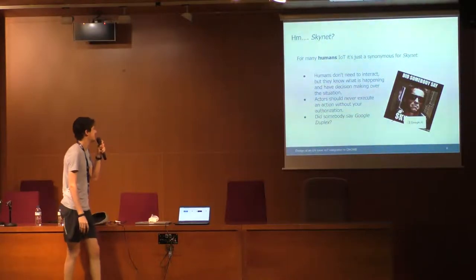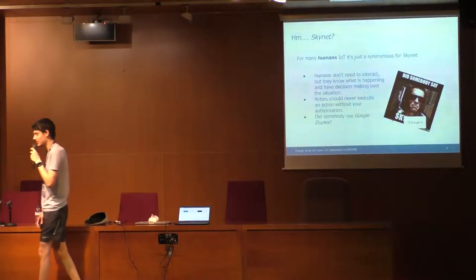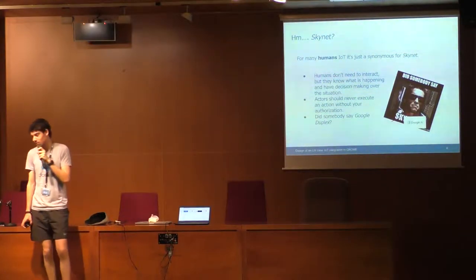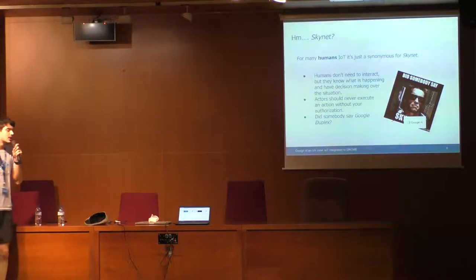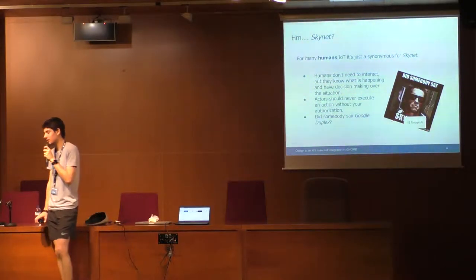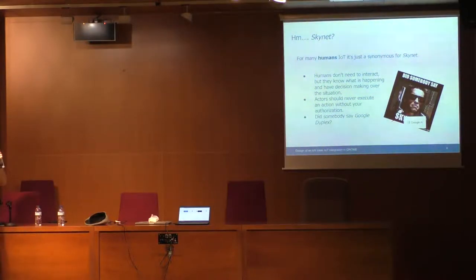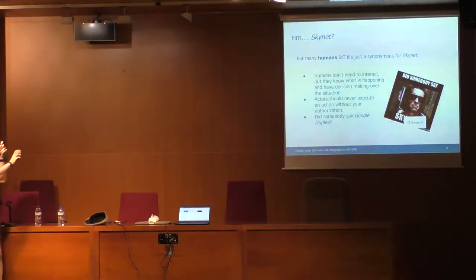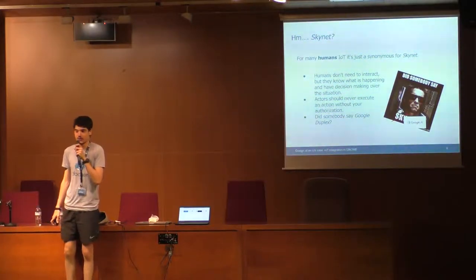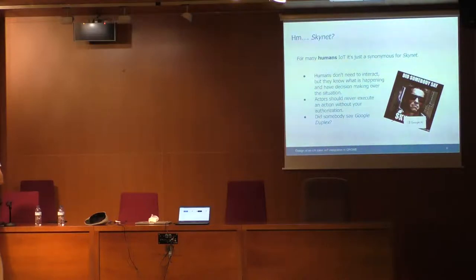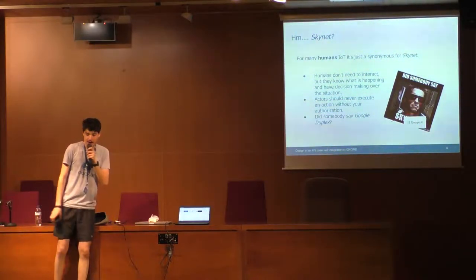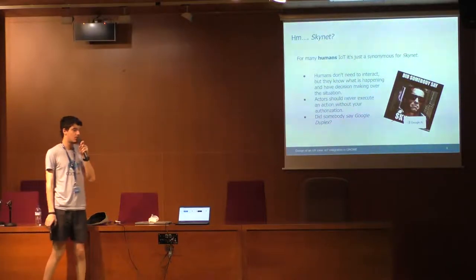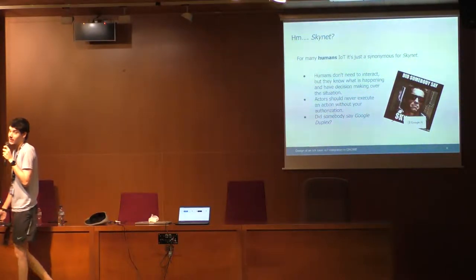A lot of people joke that IoT is just a synonym for Skynet. But actually, differently from Skynet, an IoT system isn't literally devices making decisions on their own - it's about creating solutions for preventing things from happening. But humans make the decisions. Humans know what is happening, and humans can interfere or say, "I don't want you to do it at all." The actors in an Internet of Things system should never make decisions alone, because they could be wrong and also make a bad decision.